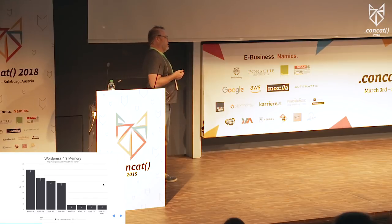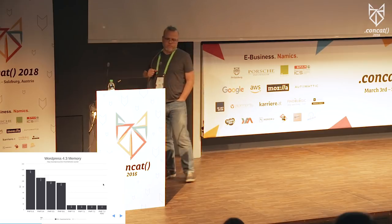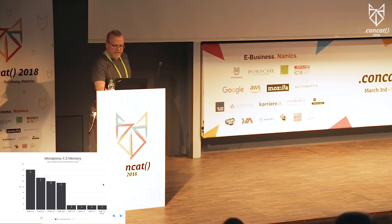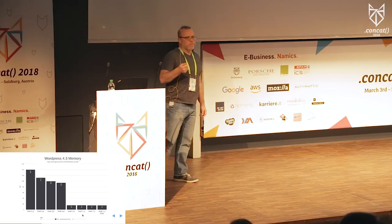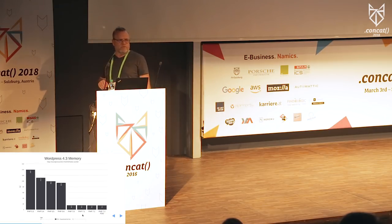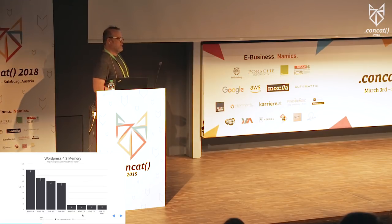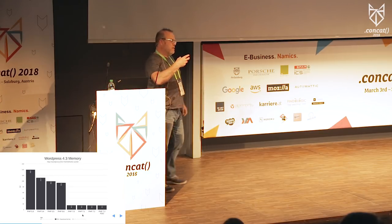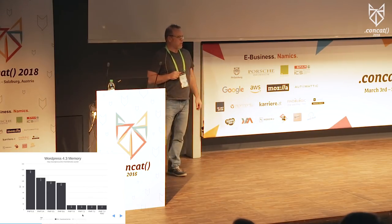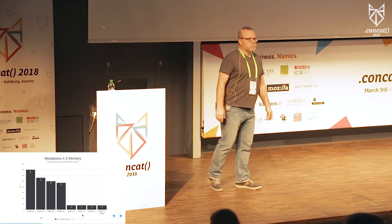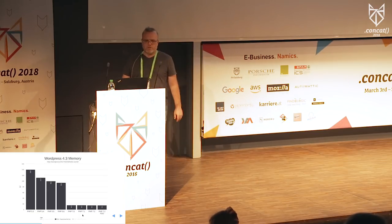More important than single-process performance is memory use. In WordPress, memory went from 140 megabytes for 10 parallel processes down to 15 megabytes — a massive drop. If you're hosting on cloud instances, you can pay for much smaller instances. PHP 7 is not just twice as fast — it means you can put six to eight times more load on that server. So if you have 80 instances in the cloud, you could probably do the same work with 10.